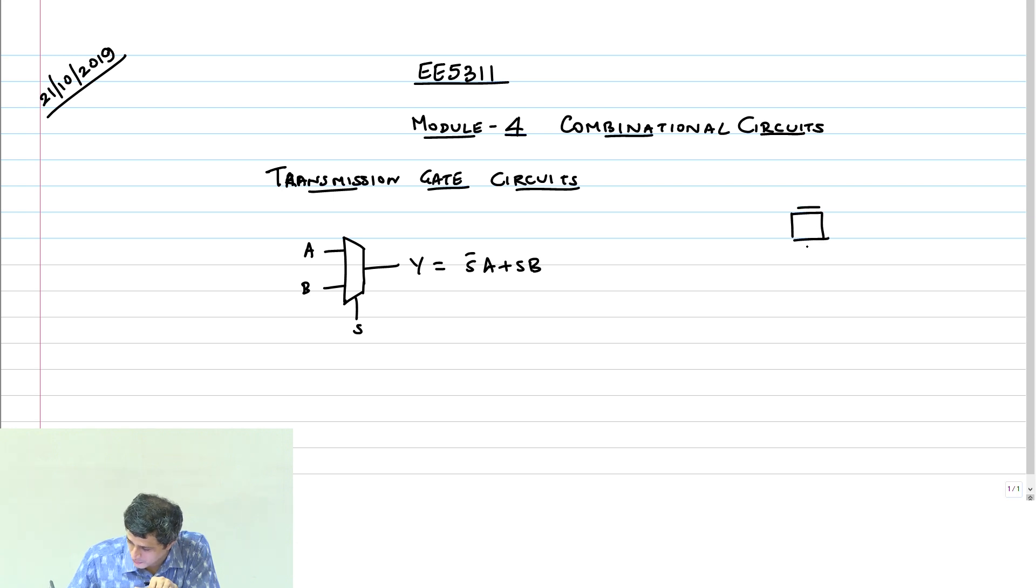A transmission gate circuit is like this. We obviously do not put only one NMOS or one PMOS because NMOS can only pass a 0, PMOS can only pass a 1. So to pass both logic levels, you put them in parallel. Whichever is least resistance will pass it easily. This is the basic idea behind the multiplexer transmission gate multiplexer. If you look at this, this is S and this is S bar.